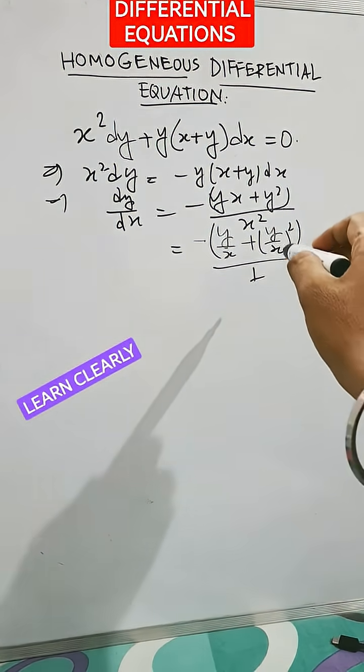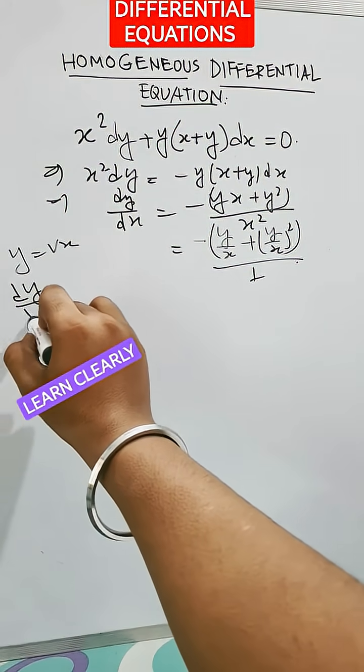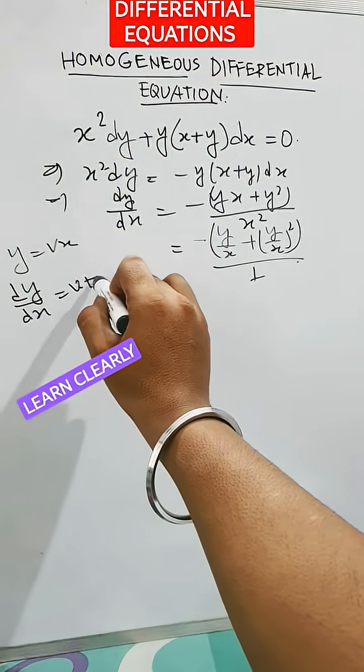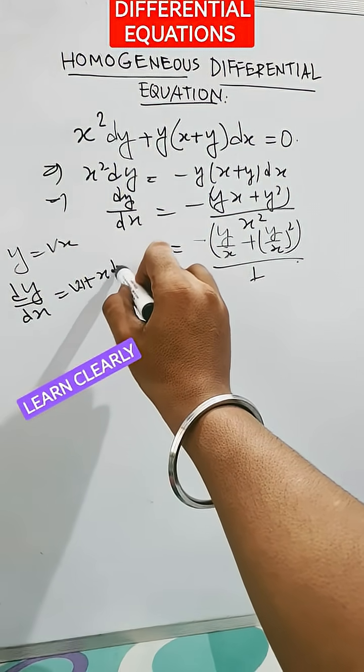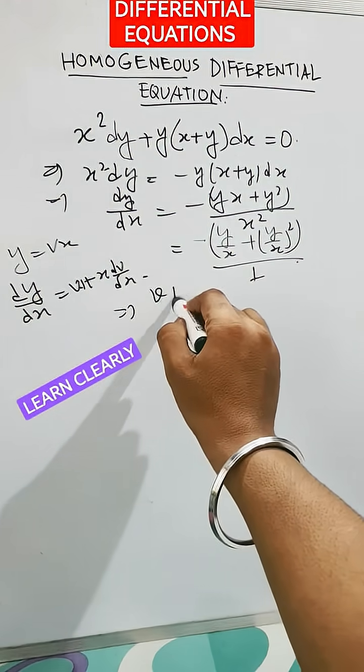So now put y equals vx. That is, dy/dx is equal to v plus x into dv/dx. Now put the value of dy/dx here and we will get v plus x into dv/dx equals minus v - v².